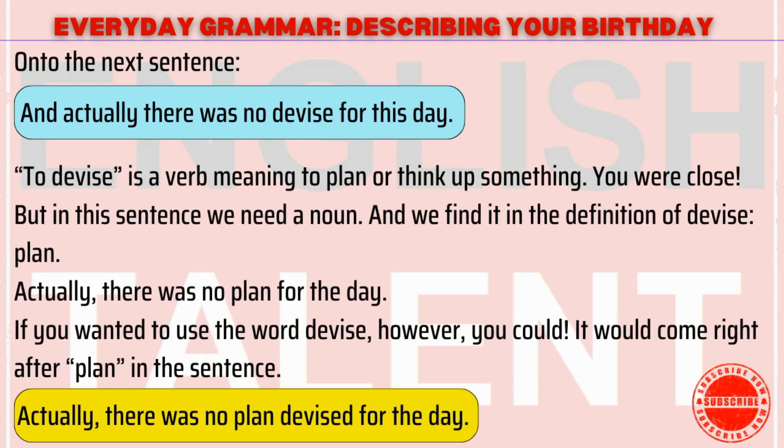On to the next sentence: And actually there was no devise for this day. To devise is a verb meaning to plan or think up something. You were close, but in this sentence we need a noun, and we find it in the definition of devise: plan. Actually, there was no plan for the day. If you wanted to use the word devise, however, you could — it would come right after plan in the sentence: Actually, there was no plan devised for the day.